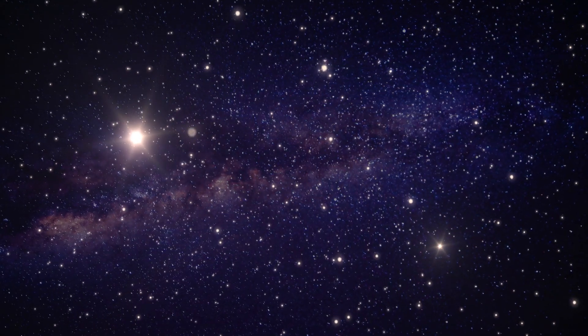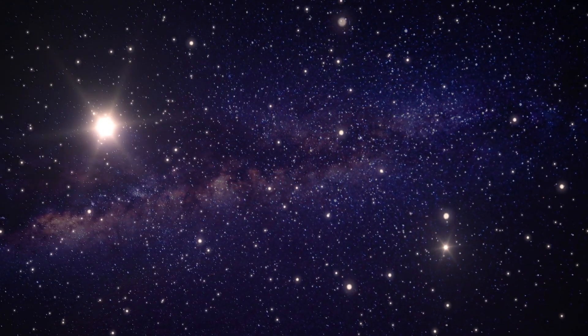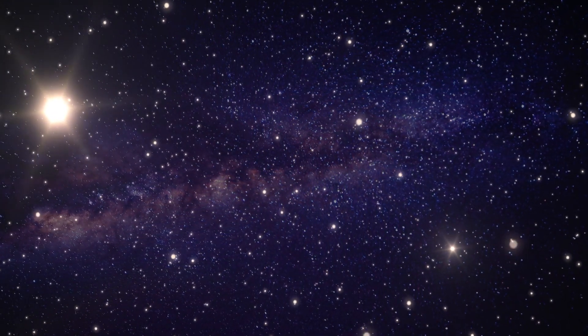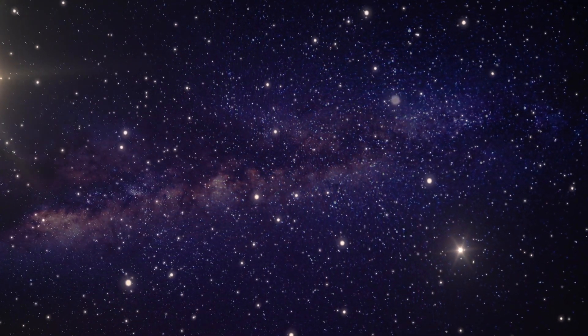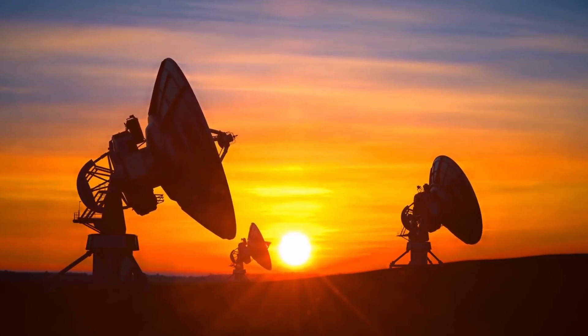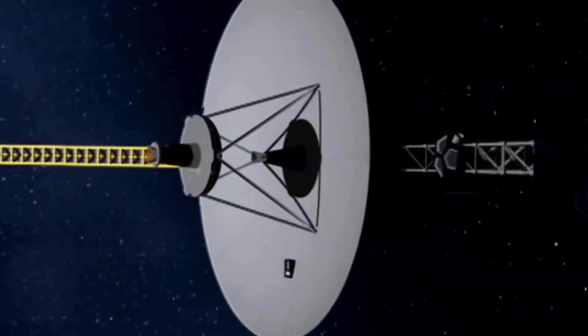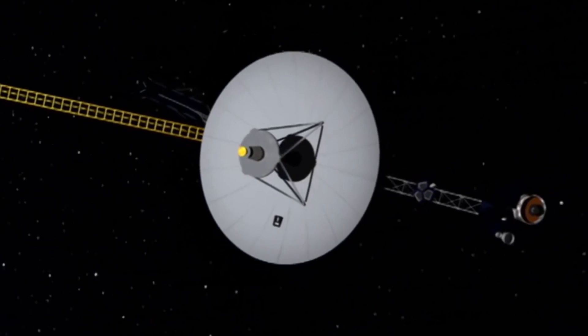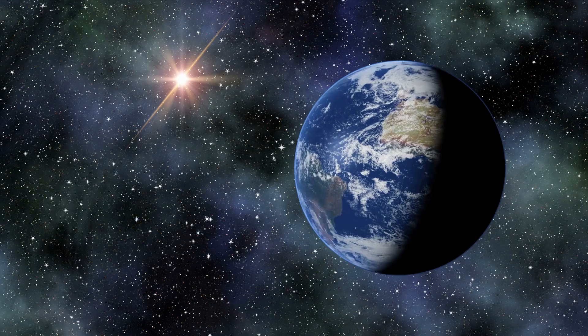There was a message on board each vessel intended for any form of extraterrestrial intelligence that could happen to come across it in the near future. It was a gold-plated copper phonograph record that had visuals and sounds intended to represent the variety of life and culture on planet Earth.